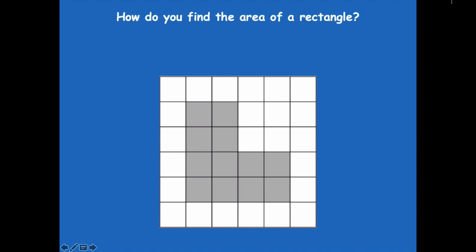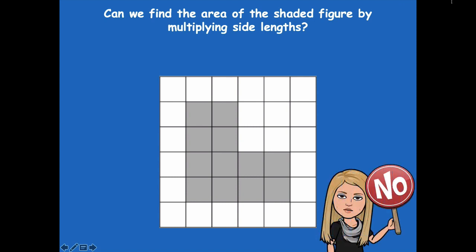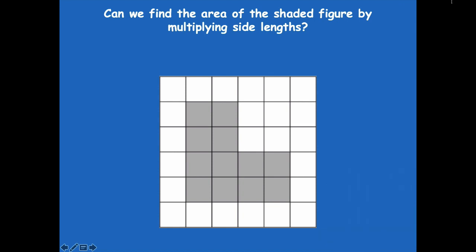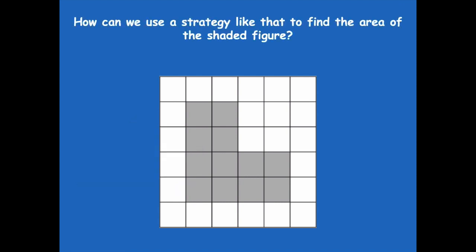How do you find the area of a rectangle? We multiply the side lengths — length times width. Can we find the area of the shaded L-shaped figure by multiplying the side lengths? No, we can't — because we're missing a chunk to make it a full rectangle. Thinking back to our application problem, we split a rectangle into two smaller rectangles. How can we use that strategy to find the area of this shaded figure? We could draw a line to split it into two smaller rectangles.